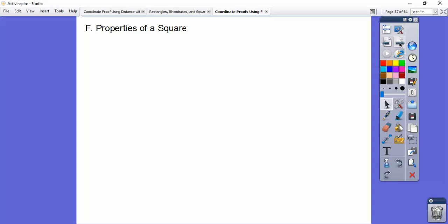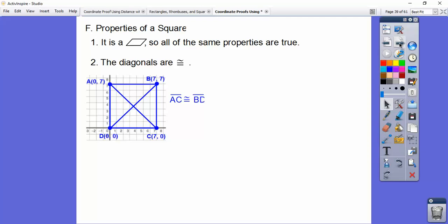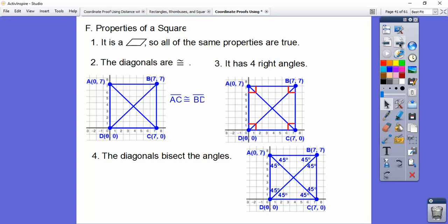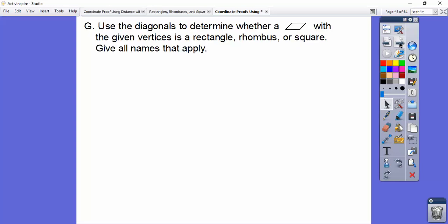Properties of a square. Well, if it's a rectangle and a rhombus at the same time, then it's a square. So it's a parallelogram. Diagonals are congruent because that's what a rectangle is. It has four right angles because that's what a rectangle is. Diagonals bisect each other, and the diagonals are perpendicular. Also, all four sides are congruent, and you knew that. So here we go. Use the diagonals to determine whether the parallelogram with the given vertices is a rectangle, rhombus, or square. So if it is a rectangle and a rhombus, then it's a square.